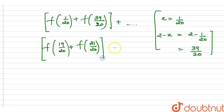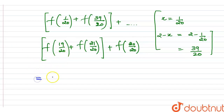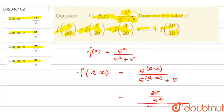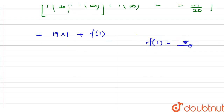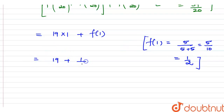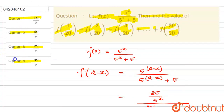The remaining unpaired term is f(20/20), which is f(1). To solve f(1): substituting x = 1 gives 5 divided by (5 + 5) = 5/10 = 1/2. So f(1) = 1/2. The total value of the series is 19 pairs each summing to 1, plus f(1) = 1/2. That gives us 19 + 1/2 = 39/2. The final answer is 39/2, which corresponds to option 4. Thank you.